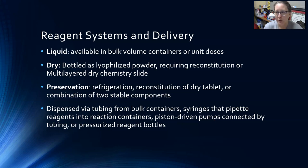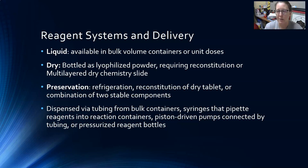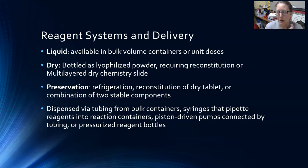Alternatively, it can be a combination of two stable components — the reagent cartridge has two blocks with Reagent A and Reagent B, which are stable if not mixed. A certain amount of Reagent A is added to the reaction vessel, then Reagent B is added, they mix to make the working reagent with limited stability, and then the specimen is added. Reagents are often dispensed via tubing from bulk containers, syringes, piston-driven pumps, or pressurized reagent bottles — the goal being to get reagents into a vessel for reaction with the sample.